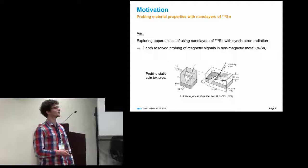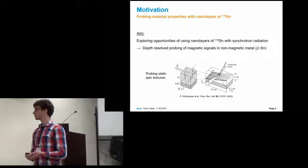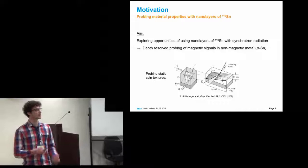Now, our approach is to use beta-tin here, because beta-tin is paramagnetic, so it doesn't perturb the magnetic state, and thus it can be embedded in non-magnetic metal.